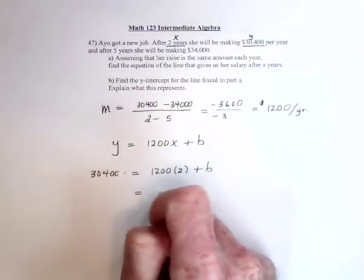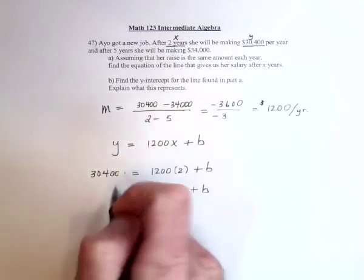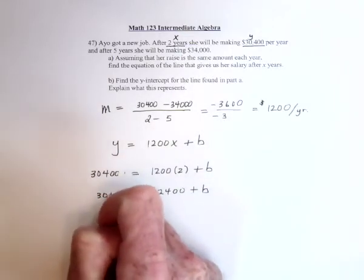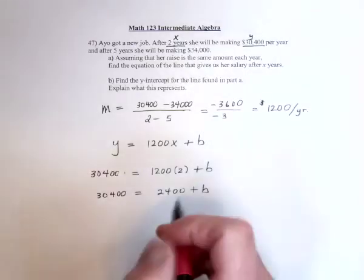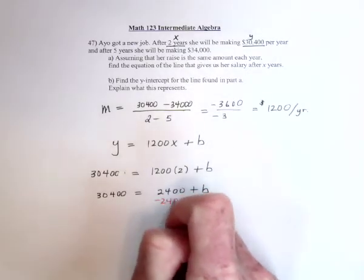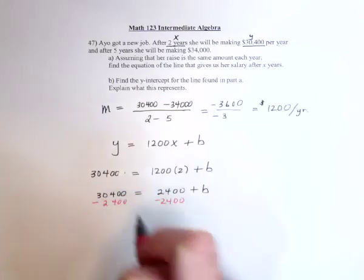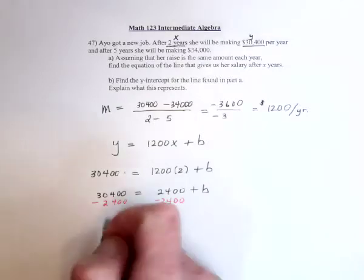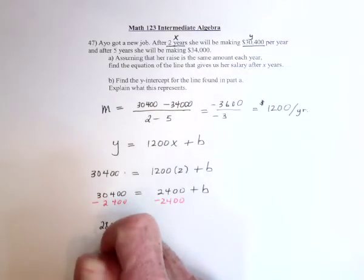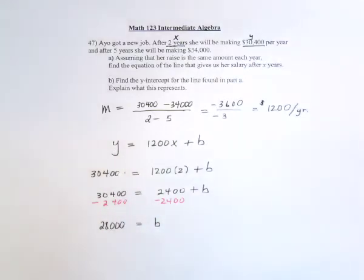So this is 2400 plus b. This is $30,400. And then just subtract 2400 from both sides. Nice. The 400s are going to cancel. Now 30 minus 2 is 28. So 28,000. 28,000 is the b.